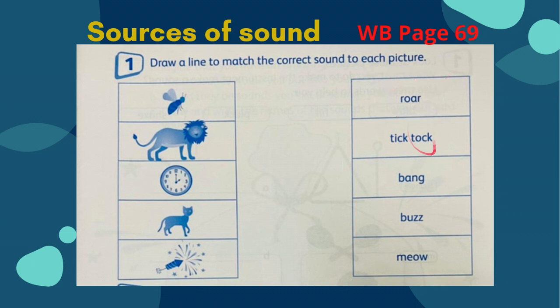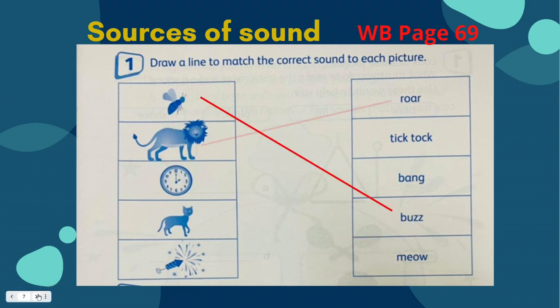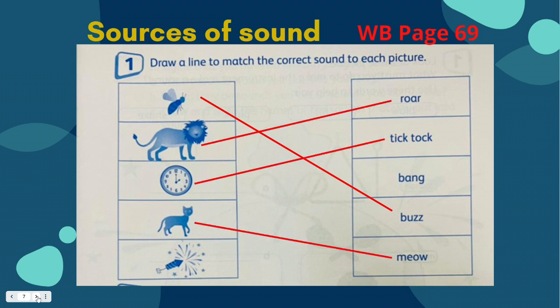The sounds listed are: buzz, roar, tick-tock, meow, bang. A bee makes a buzz; a lion makes a roar. A clock goes to tick-tock. What about the cat? Meow. And a firework — bang.